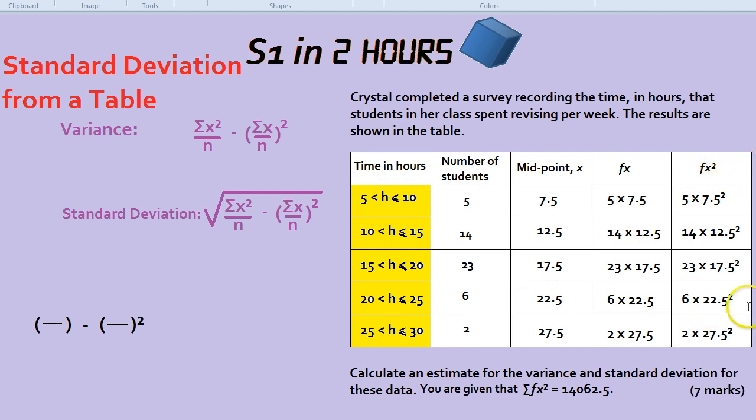That's where we get fx². After we get fx², which by the way they've given us, always use the data that they give you. So we're told that the sum of fx², they've worked all this out and added it all up. That's what sigma means, the sum. We then have to divide by n. So let's start working it out.